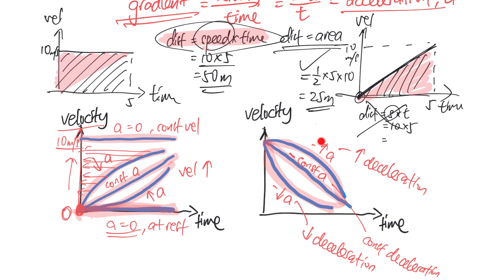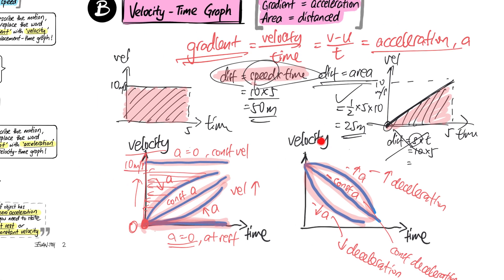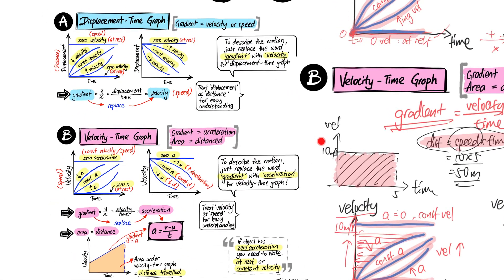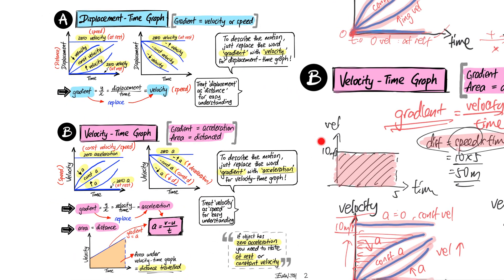In summary, there are two types of graphs. For the displacement-time or distance-time graph, the only key thing to remember is that the gradient represents speed or velocity. You don't need to memorize this — just think: y over x is displacement over time, which naturally gives you speed. The area under a distance-time graph does not mean anything significant.